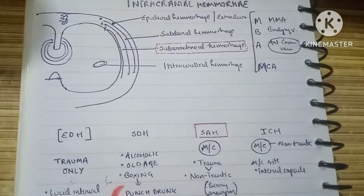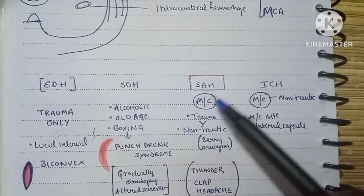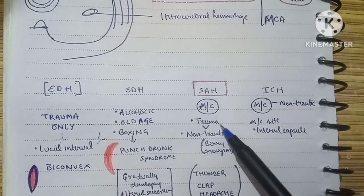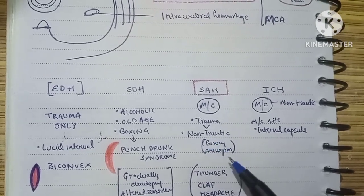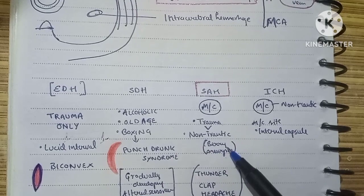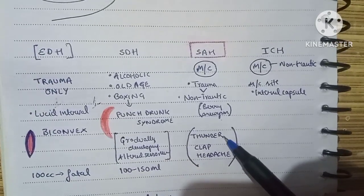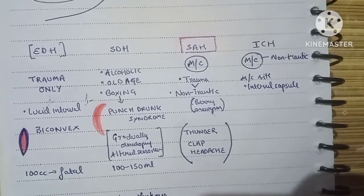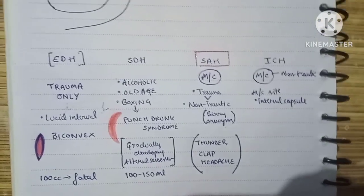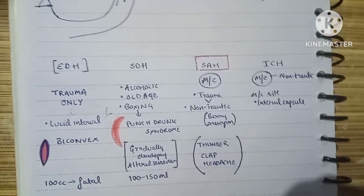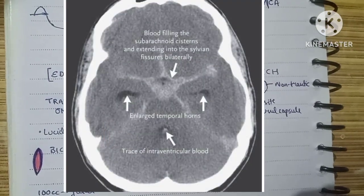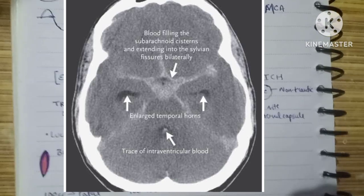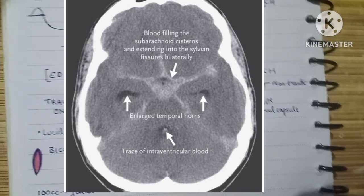The most common intracranial hemorrhage is subarachnoid hemorrhage. It occurs more due to trauma than non-traumatic causes, though a common non-traumatic cause is a berry aneurysm. It is characterized by a thunderclap headache — described as the worst headache the person has ever experienced. On CT, the subarachnoid hematoma spreads along the cisterns and we see enlarged temporal horns.